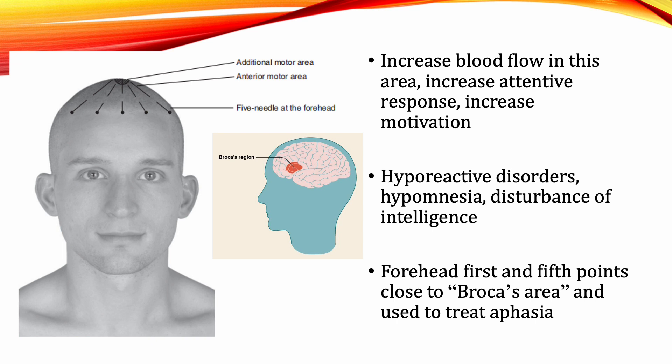They treat hyporeactive disorders, hypomnesia, and disturbance of intelligence. For paralysis from cerebral damage and sequelae of brain damage, use this group of points with the three needles at the temple. The forehead first and fifth points are also close to Broca's area and are used to treat aphasia.